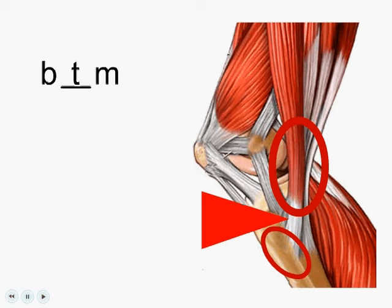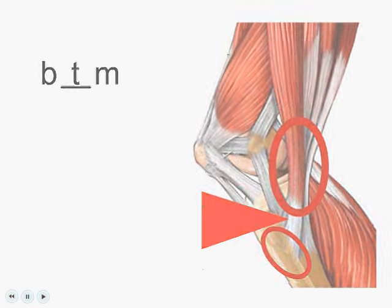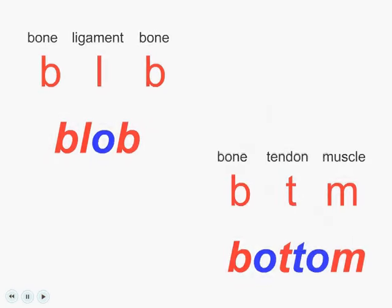That has been your lesson in telling the difference between tendons and ligaments. Remember blob and bottom: bone, ligament, bone spells 'blob,' and bone, tendon, muscle spells 'bottom.' Thank you.